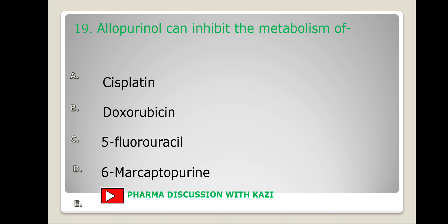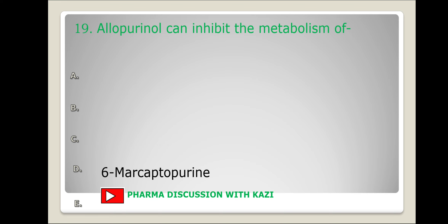Next question: allopurinol can inhibit the metabolism of — cisplatin, doxorubicin, 5-fluorouracil, or 6-mercaptopurine? The correct answer is 6-mercaptopurine. 6-Mercaptopurine is metabolized to 6-methylmercaptopurine by xanthine oxidase enzyme, whereas allopurinol inhibits xanthine oxidase. Hence when allopurinol is used concomitantly with oral 6-mercaptopurine, the dose of 6-mercaptopurine must be reduced to one-third to one-fourth of its usual dose.